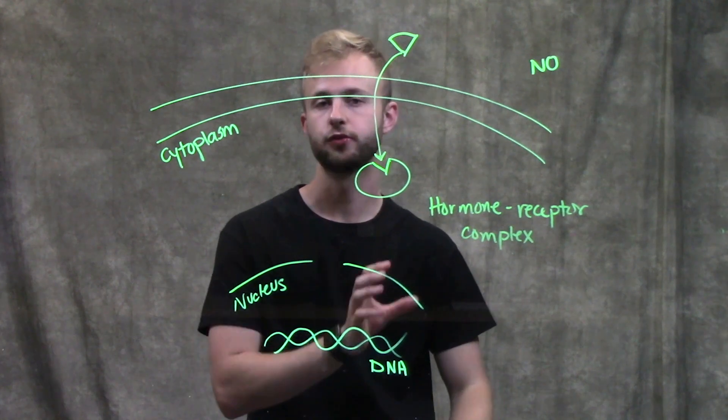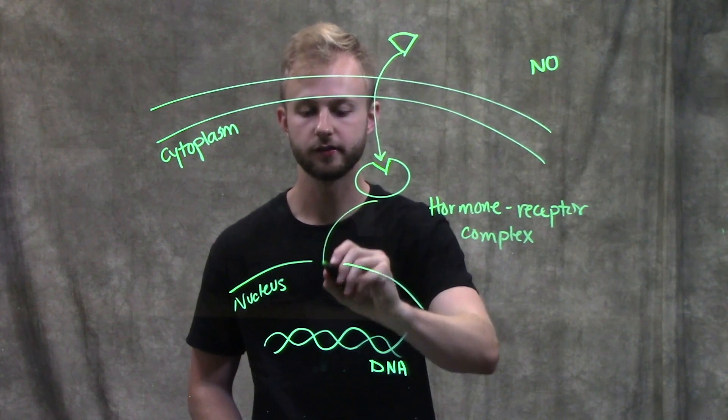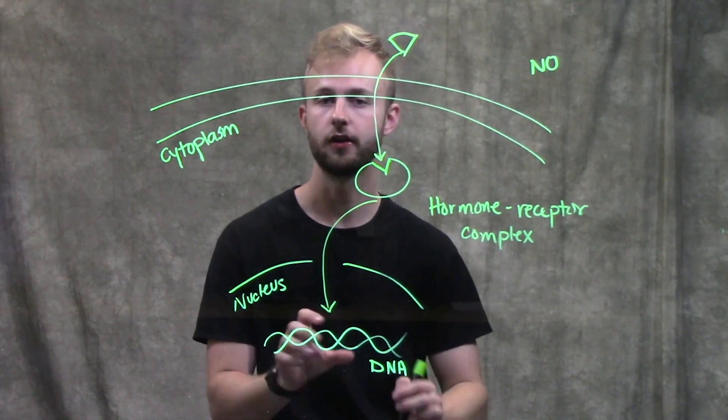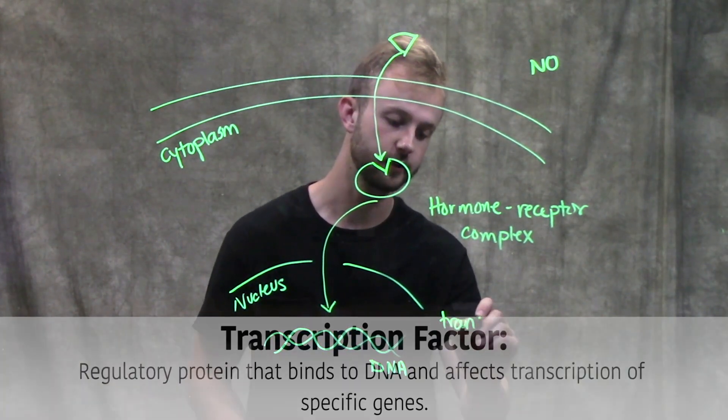Once we form this hormone receptor complex, we're not done yet. Now this whole complex will translocate to the nucleus and bind to particular gene proteins on our DNA. When they do that, they're able to act as a transcription factor.